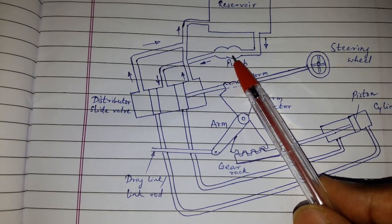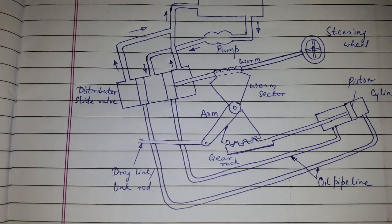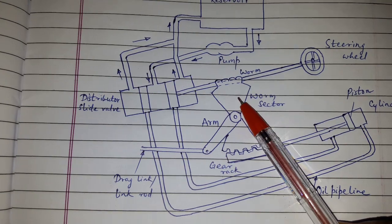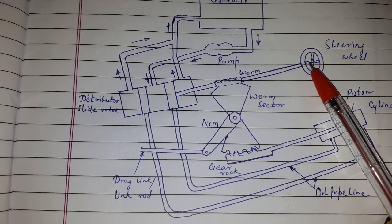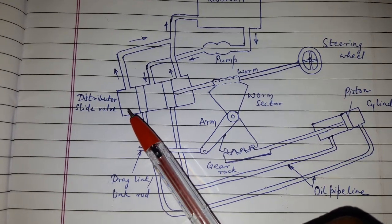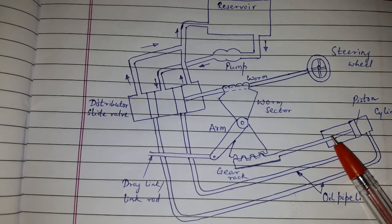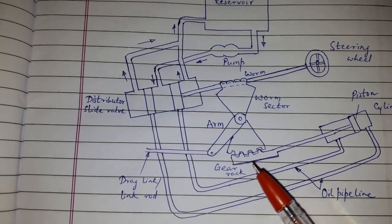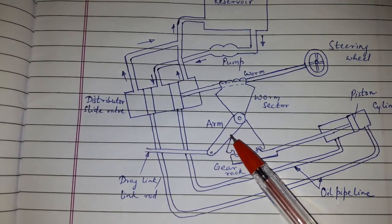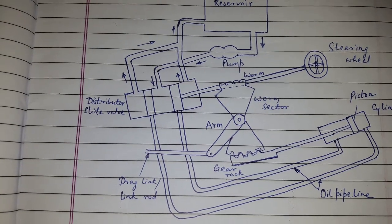The distributor slide valve is filled with oil and it has three ports which are connected to the reservoir. The pump delivers the oil under pressure in the central port. Hydraulic power steering has a worm sector arrangement which becomes active when the steering wheel is turned. The oil from the distributor slide valve goes to the cylinder, which has a piston connected to the gear rack. The gear rack meshes with the worm sector.